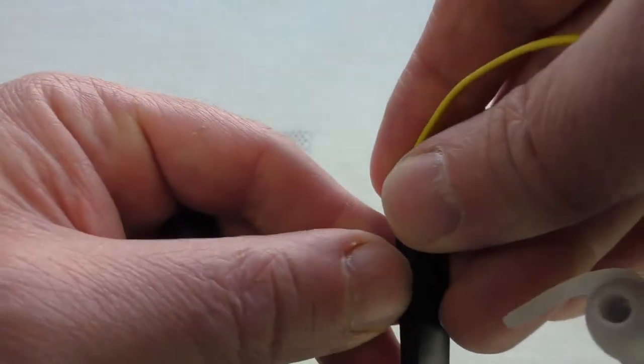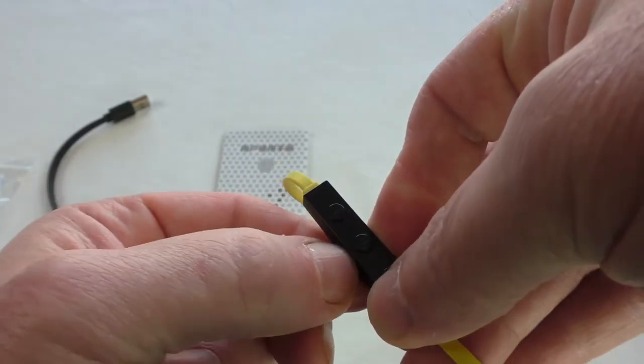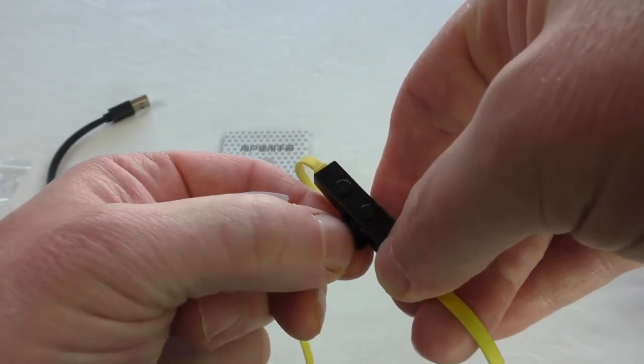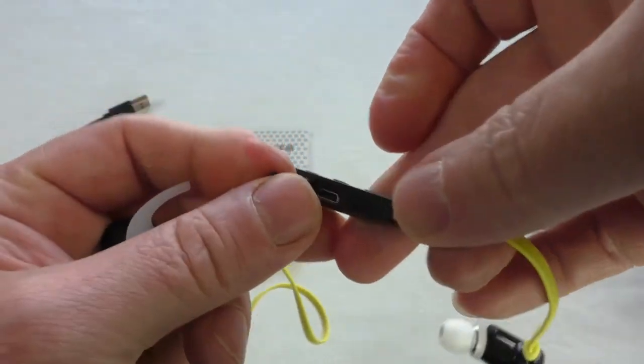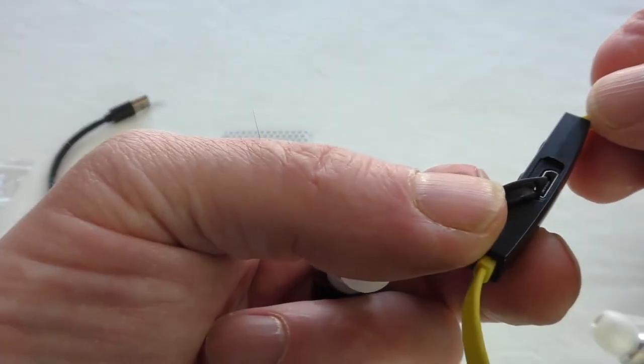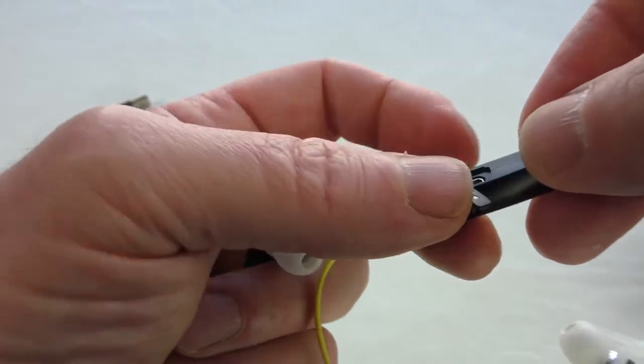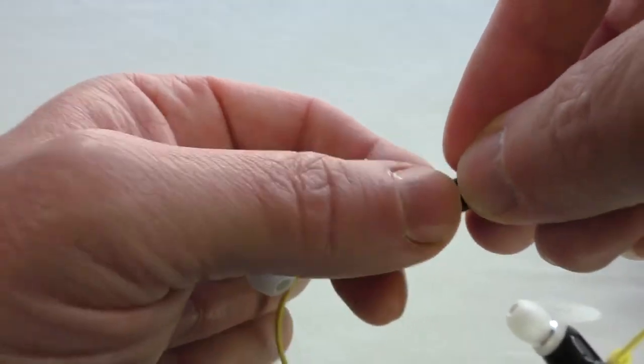You've got the nice little charge port on the side there. If we undo that, it does take a little bit of prizing out and you can see you've got your little micro USB port in there. And you just plug that back in there.